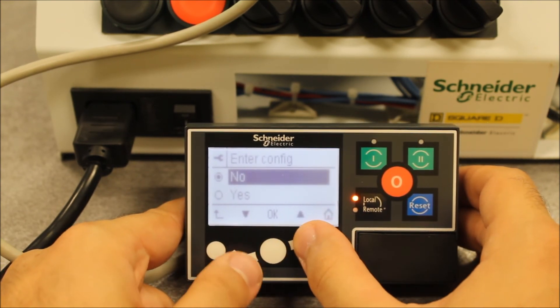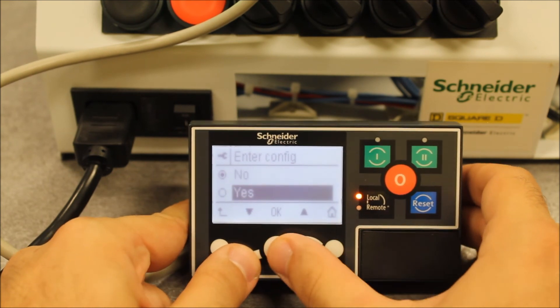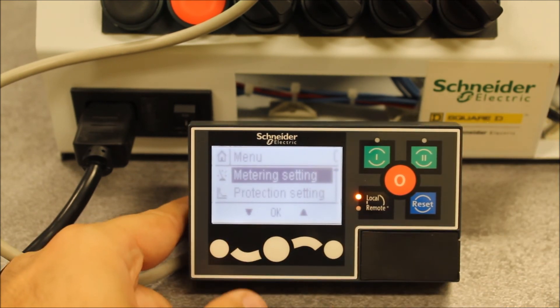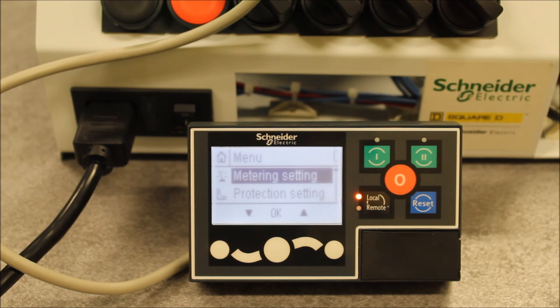And again, it will prompt you whether you are sure or not, you go down to yes. And the top right will now go to C again, to indicate that you are now under configuration mode.